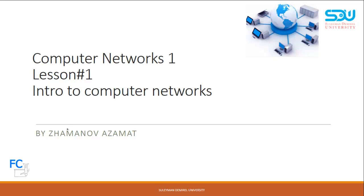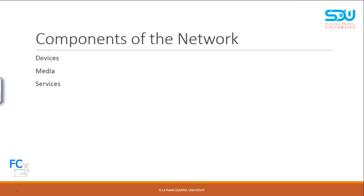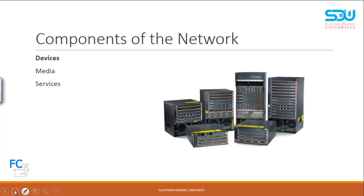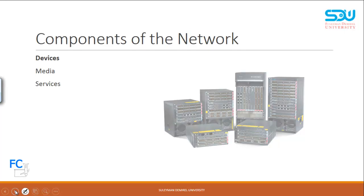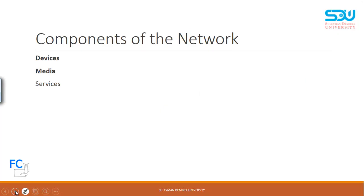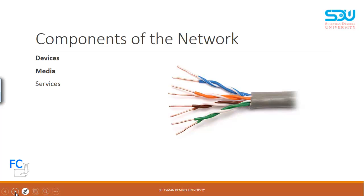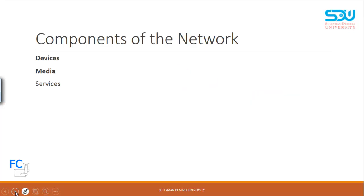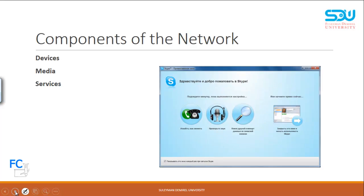What is a computer network? First of all, we'll take a look at the components. Computer networks consist of three main components: devices — the physical hardware; the media through which your information is going to be transmitted; and the services — any kind of application used by your devices to make communication, for example Skype or WhatsApp.